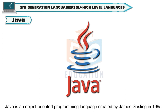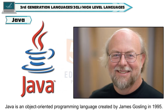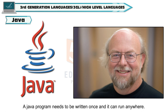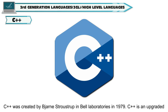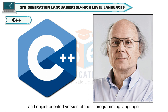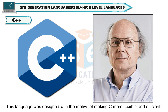Java is an object-oriented programming language created by James Gosling in 1995. Java is widely used because of its platform independence — a Java program needs to be written once and it can run anywhere. C++ was created by Bjorn Stroustrup at Bell Laboratories in 1979. C++ is an upgraded and object-oriented version of the C programming language, designed with the motive of making C more flexible and efficient.